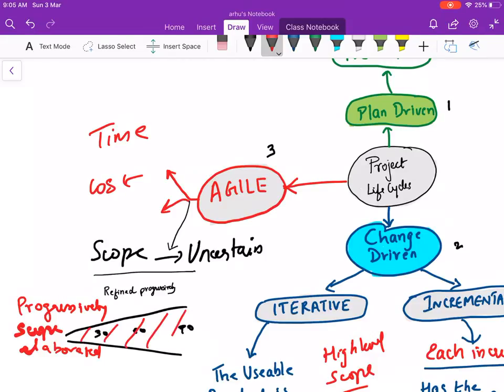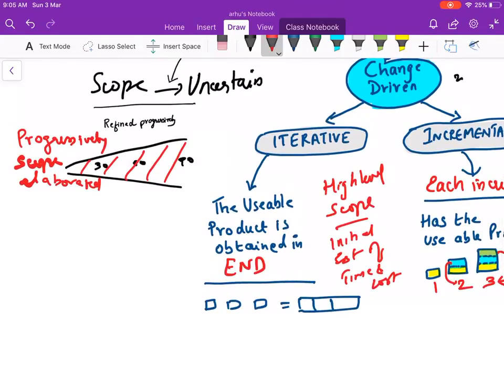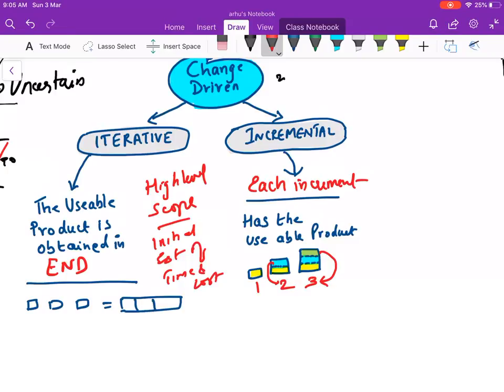But in progressive elaboration the scope is progressively elaborated, gets more clear on the scope as and when we go ahead. But then there's another concept called as rolling wave planning. This is used more in the incremental side wherein at the end of phase one you plan for phase two. This is called rolling wave planning.